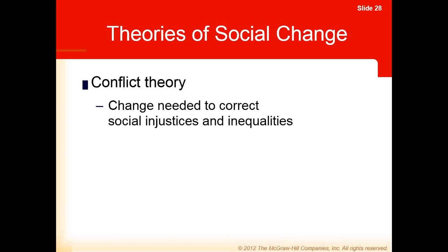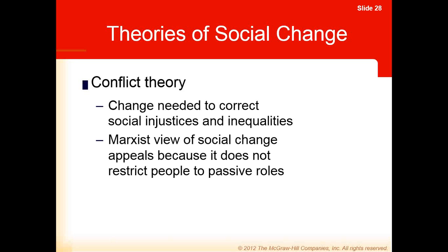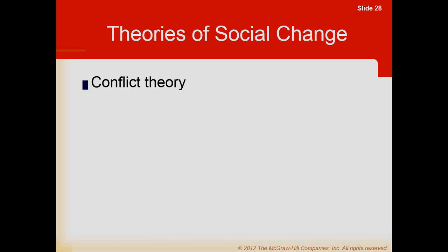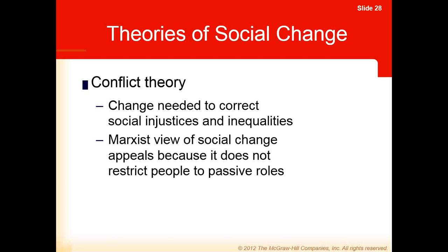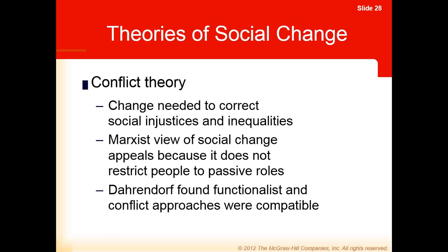The Marxist view of social change appeals because it puts people as actors rather than restricting them to passive roles. The proletariat rising up and overthrowing the bourgeoisie is an active role in society. Dahrendorf made a synthesis finding that functionalism and conflict theory are compatible in examining social change.